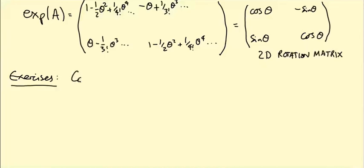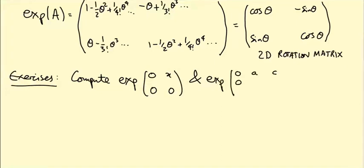I want you to compute exp of A, where A is the matrix [[0, x], [0, 0]], and exp of [[0, A, C], [0, 0, B], [0, 0, 0]]. So here, like θ, x, A, B, and C are just variables. I want you to compute those two, or at least think about how you might compute them before class. Hopefully the calculation there will be easier than the calculation we've just done, and you'll see why if you do the exercise.